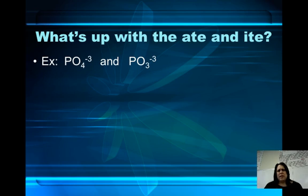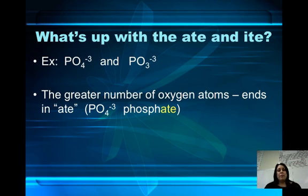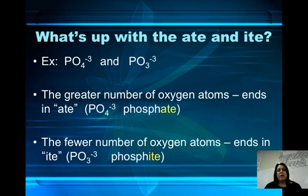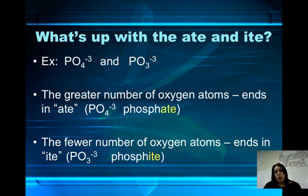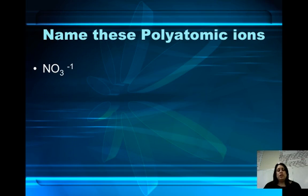So, what's up with the -ate and the -ite? The PO4 minus 3 and the PO3 minus 3. Just like with the NO2 and NO3 example, there's one less oxygen in PO3 than there is in PO4. The greater number of oxygen atoms ends in -ate, and the fewer amount ends in -ite. I'm not going to have you remember that — I just wanted you to know why the difference. One has more oxygen atoms, one has less oxygen atoms. Use your charts, look these up, and name them.